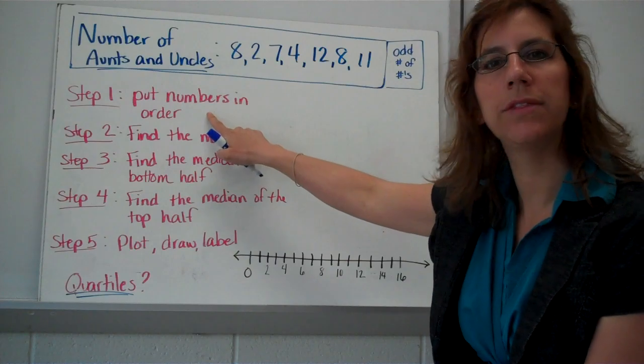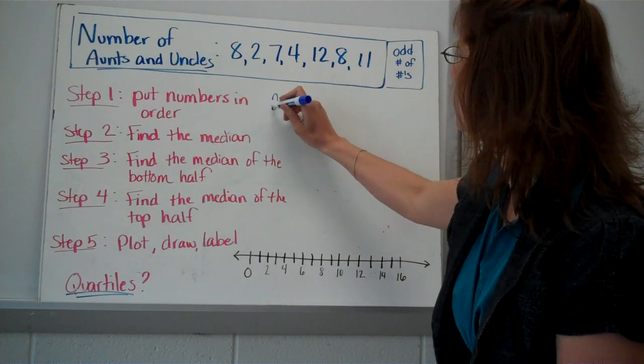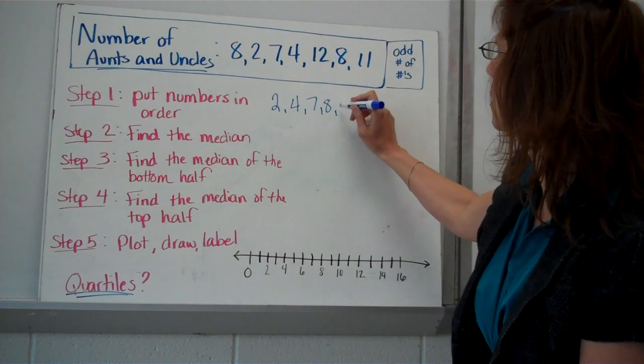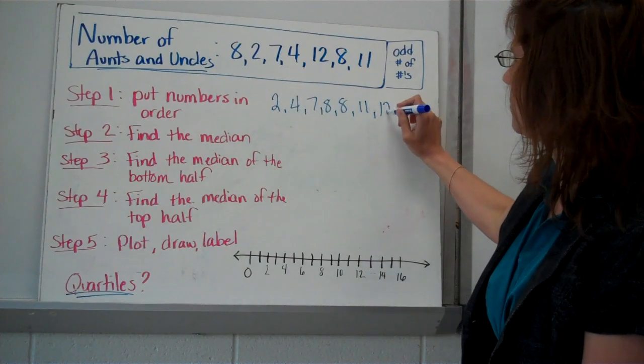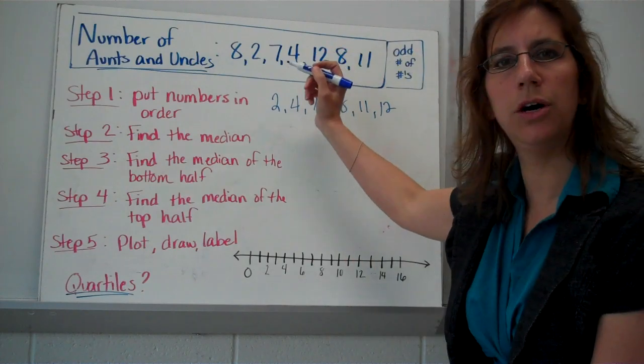And we're going to go ahead and go through the steps of how to make a box and whisker graph. So step number one is we're going to be putting the numbers in order. So let's go ahead and do that together. We have 2, 4, 7, 8.